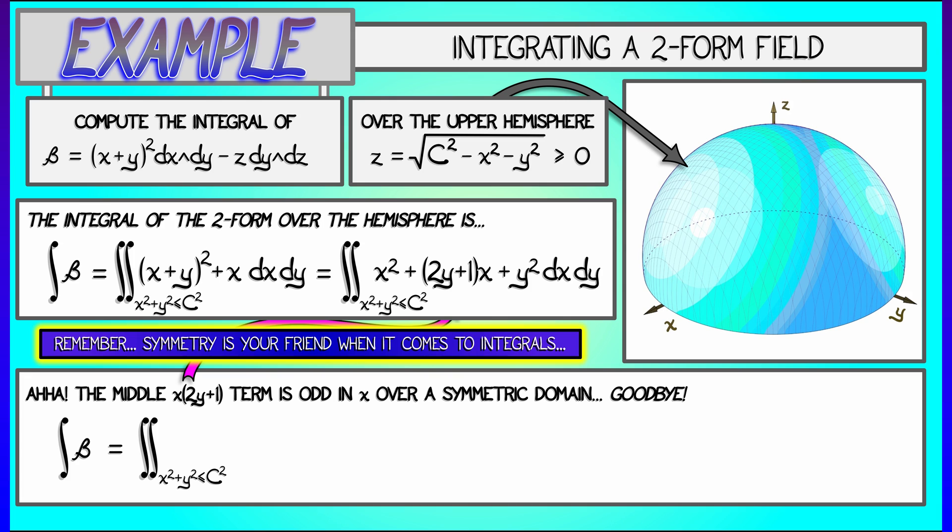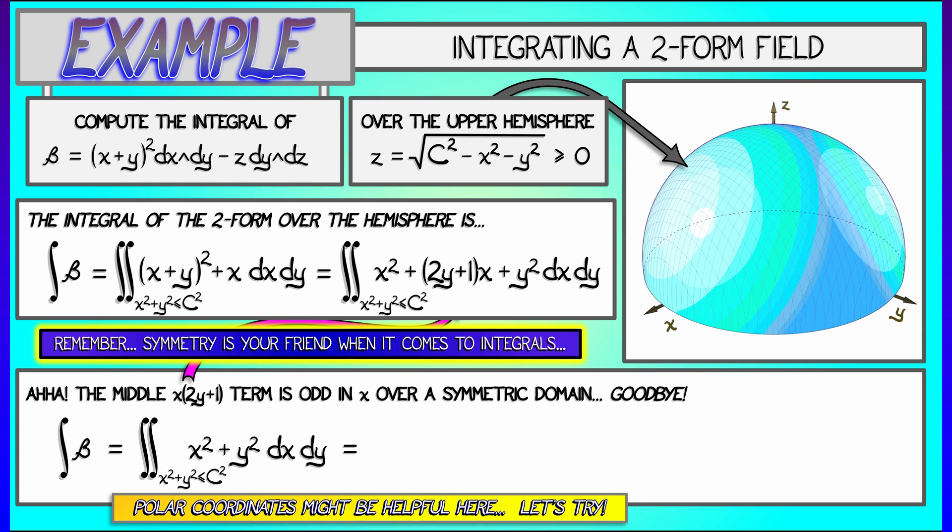What's left over is the double integral of quantity x squared plus y squared. Now, I'm integrating that over a disk in the plane. This is just crying out for polar coordinates, so let's convert this. We integrate as theta goes from 0 to 2 pi, r goes from 0 to c, r squared times the area element r dr d theta.